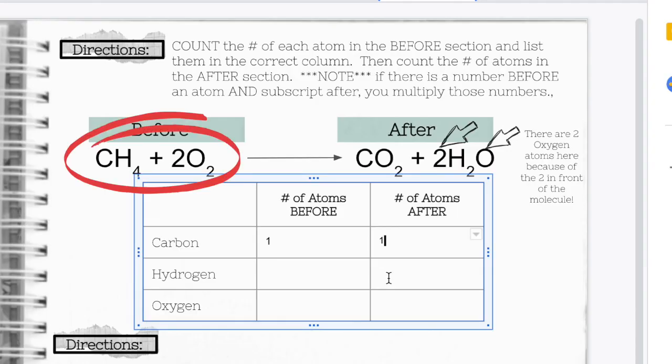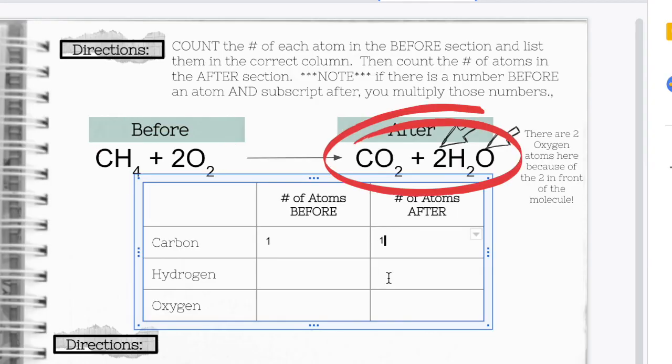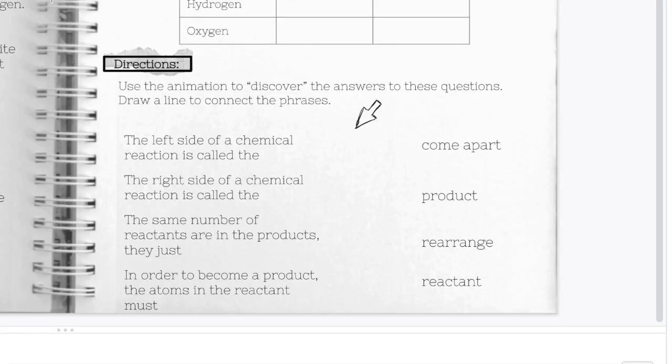So as you're counting the number of atoms in the before and after sections, don't forget to use the coefficients and subscript numbers. When you're finished with that, we're going to move down to the bottom of the page and continue our exploration here.